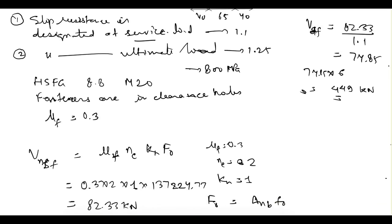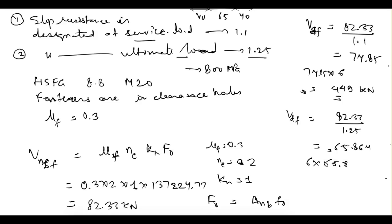For the second case — no slip allowed at ultimate load — the partial safety factor is 1.25. The design shear resistance = 82.33 / 1.25 = 65.864 kN per bolt. For 6 bolts, the total shear capacity is 6 × 65.864 = 395.18 kN. This is the answer for the second case.